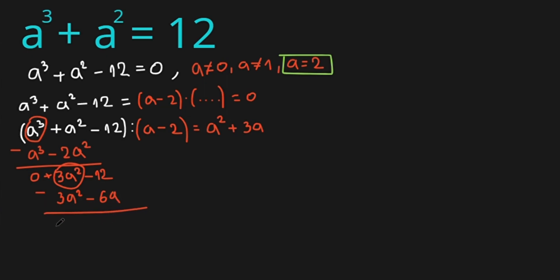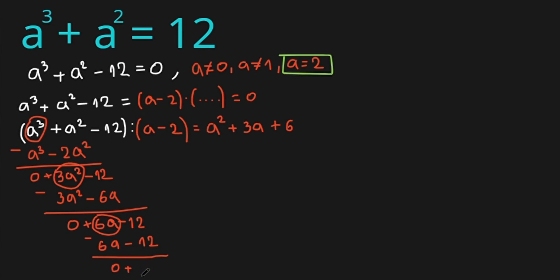Subtracting again: 3a squared minus 3a squared is 0, leaving 6a minus 12. Then 6a minus 6a is 0, and minus 12 minus (minus 12) is also 0. The remainder is zero, confirming our division is exact.